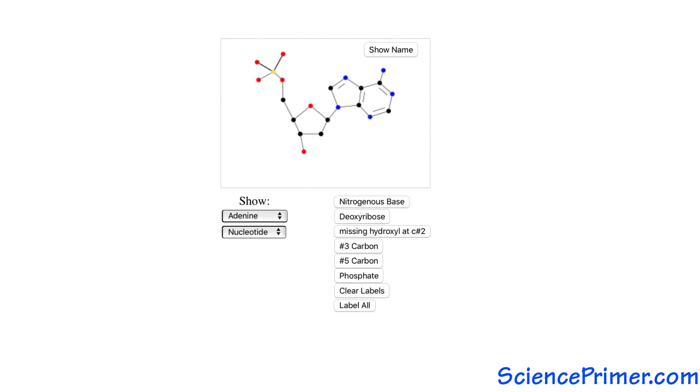The sugar in DNA is deoxyribose. Deoxyribose differs from ribose, found in RNA, in that the number two carbon lacks a hydroxyl group, hence the prefix deoxy. This missing hydroxyl group plays a role in the three-dimensional structure and chemical stability of DNA polymers.